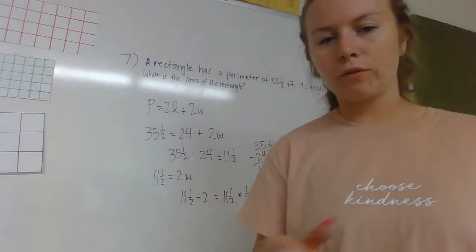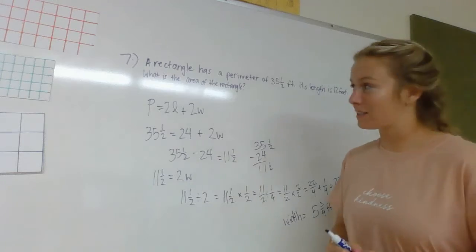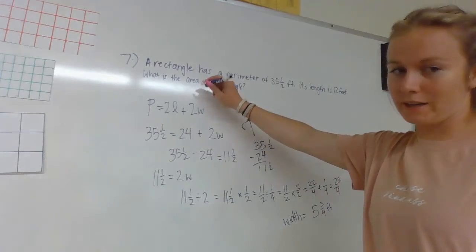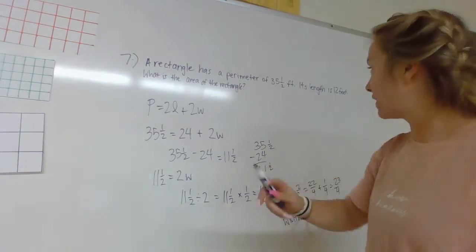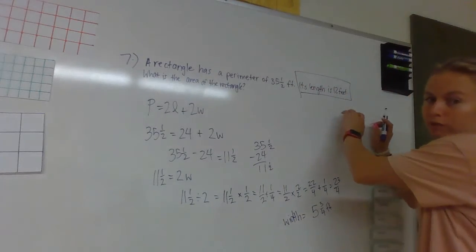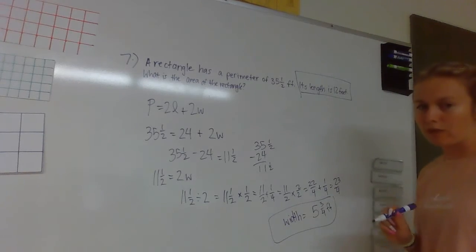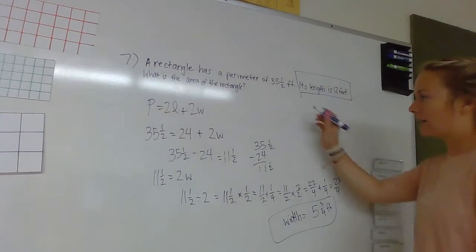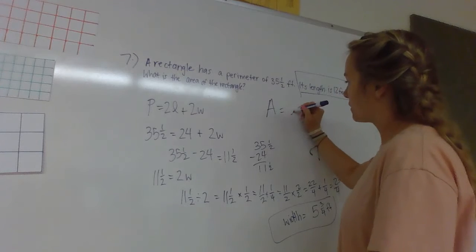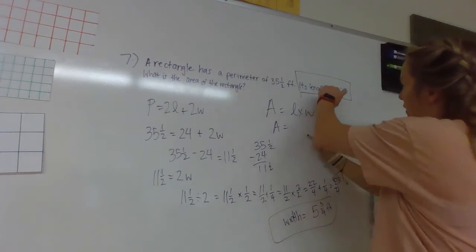Okay, 5 and 3/4 is our width. Now with this information we still have to figure out what our area is. So we've got to take our length—our length is 12 feet—and now our width is 5 and 3/4 feet. So I get to do A equals L times W.